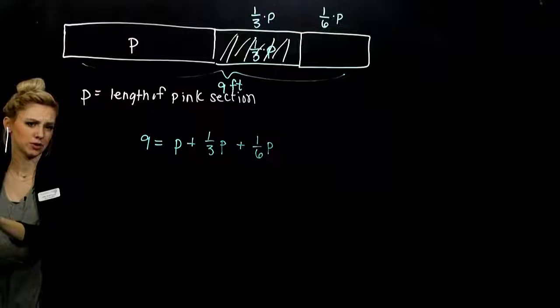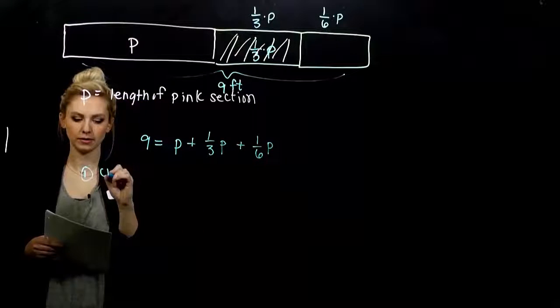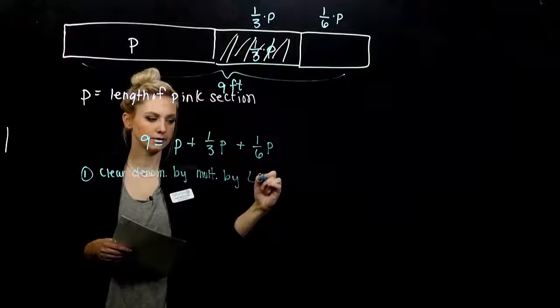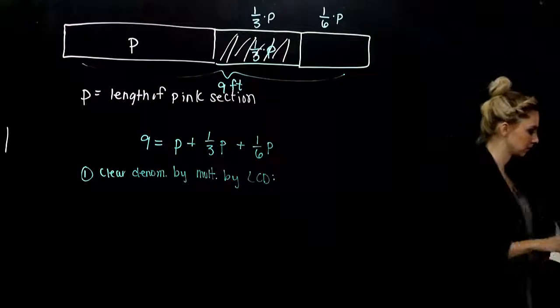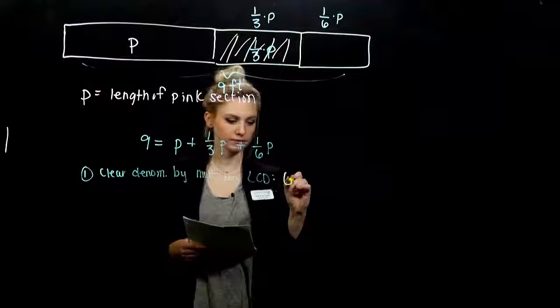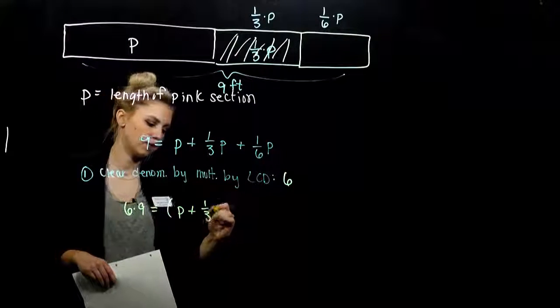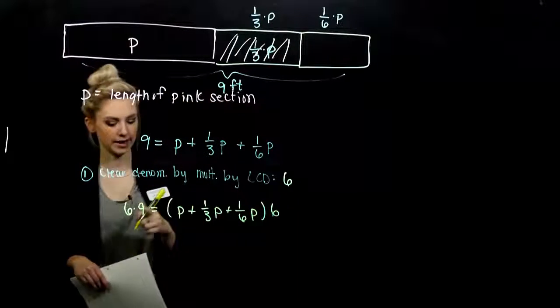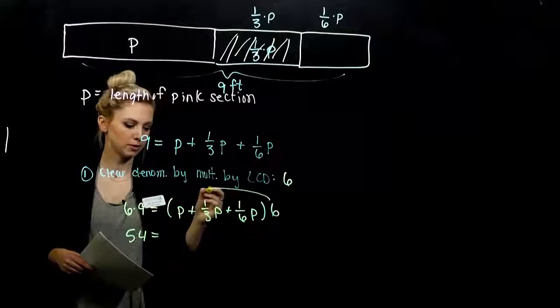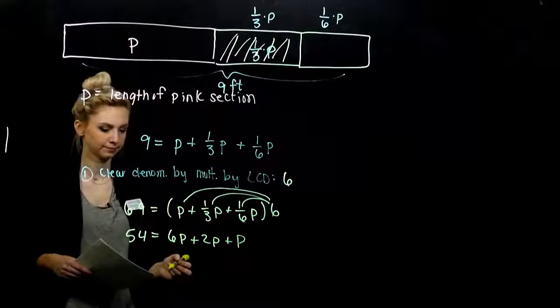So when I add pink, and the mixed, and the green, altogether it's nine feet. I have fractions. I don't want to have to deal with fractions. So how can I clear out all of these denominators, getting rid of those fractions? Multiplying by the LCD. Which in this case is six. So let's multiply both sides. This side by six, and everything over here by six as well. Let's solve. Nine times six is 54. And as we distribute, we get 6p, 2p, and 1p. Got rid of all those fractions, which is nice.